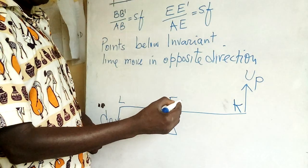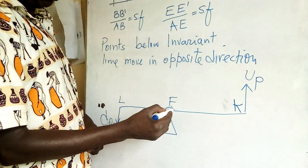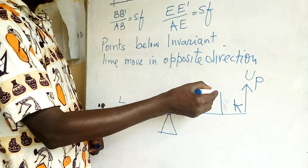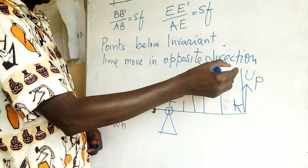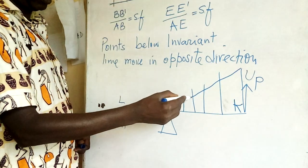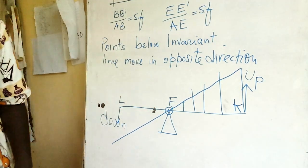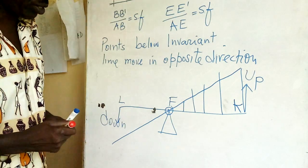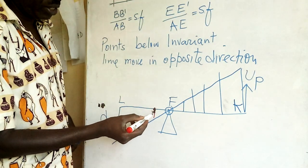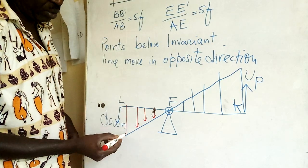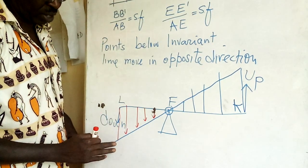But all points from fulcrum to K, all this will tend to move up proportionately. You can see then the lever will be like that. That means these ones also moved in the opposite direction proportionately.